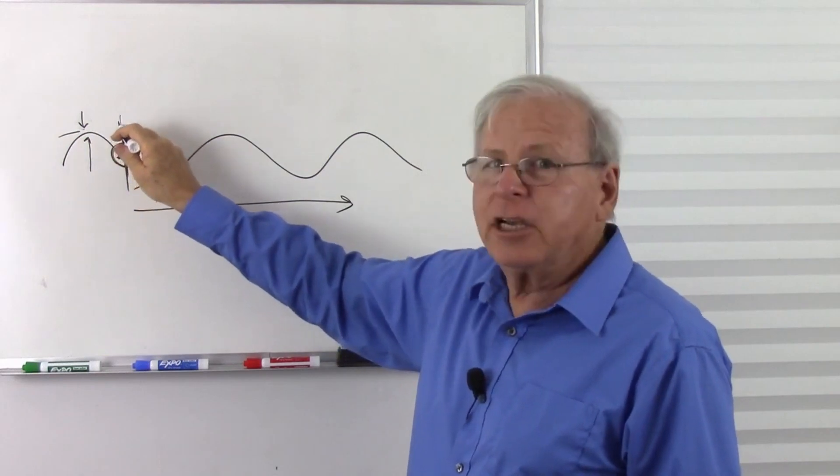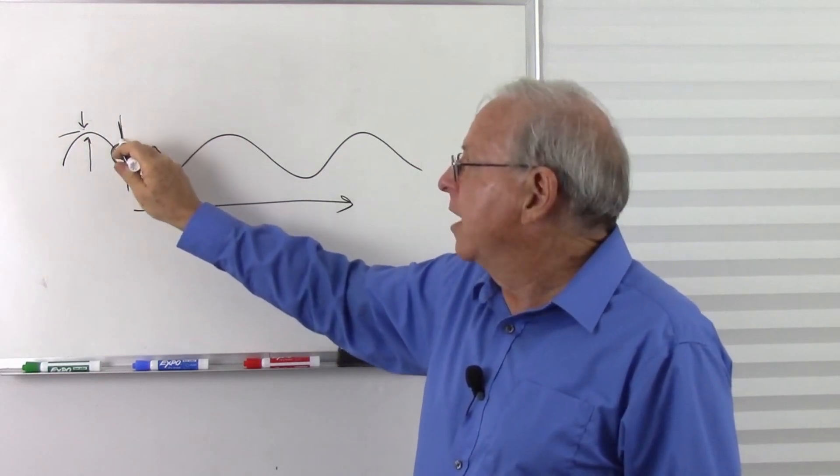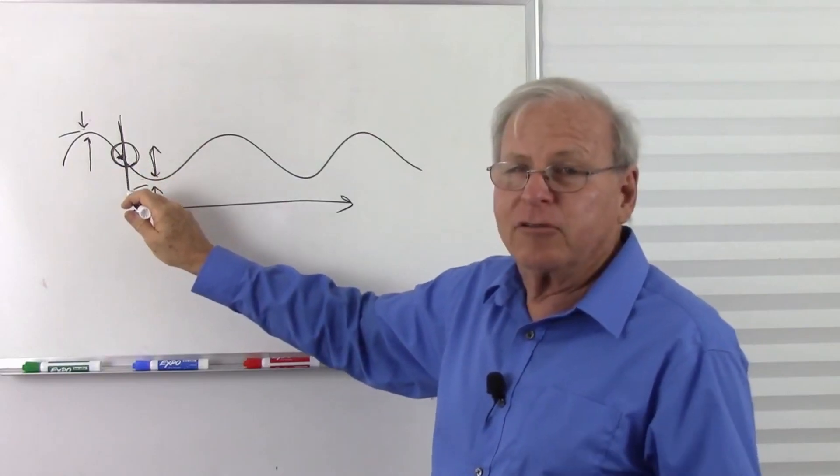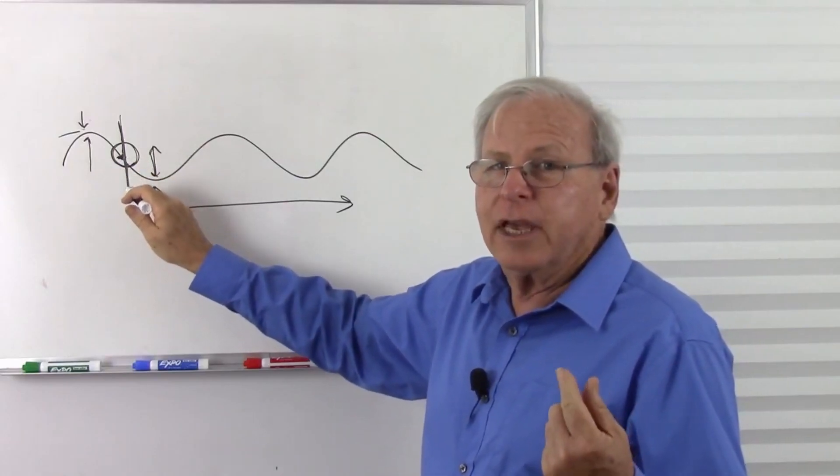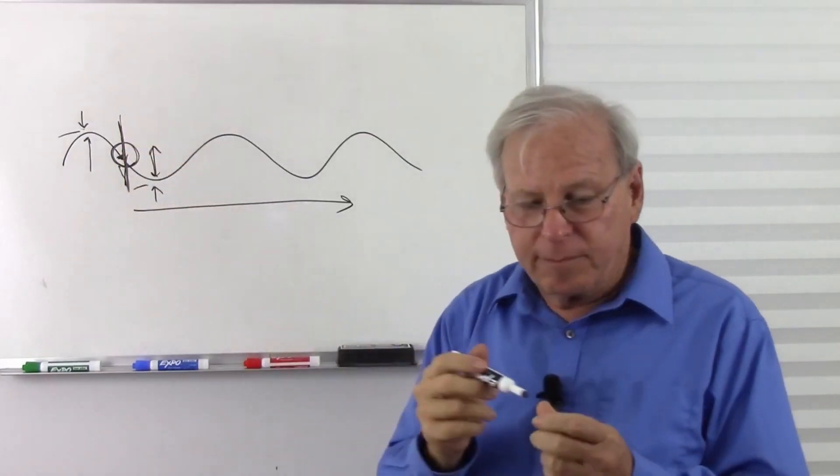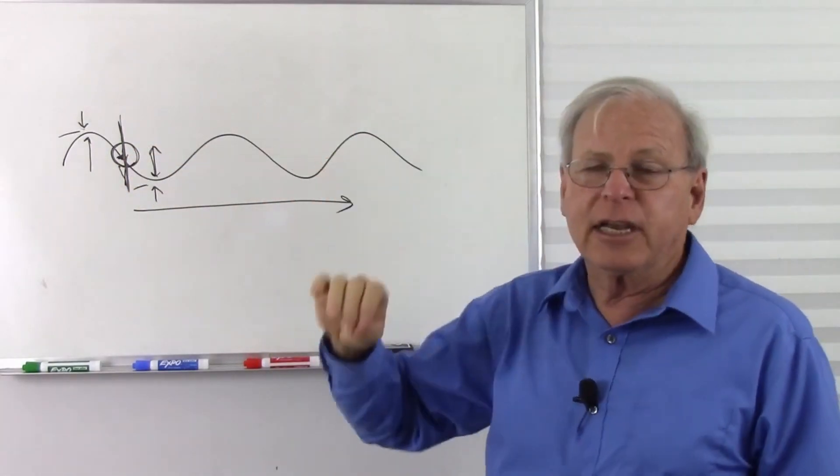So it's gaining potential energy, then it converts that kinetic energy when it's moving, then it gets back up here, stops moving, now it has potential energy, and then it moves again and converts that back to kinetic energy. So it keeps going back and forth between potential energy and kinetic energy.